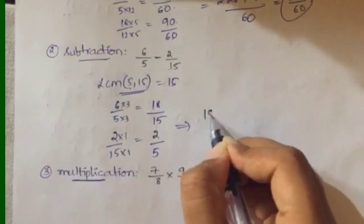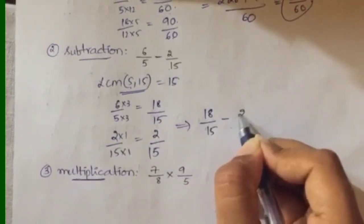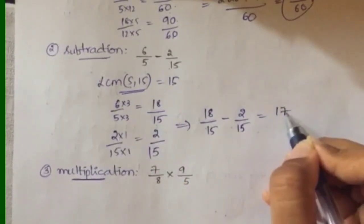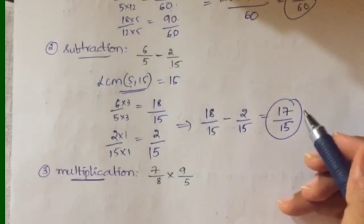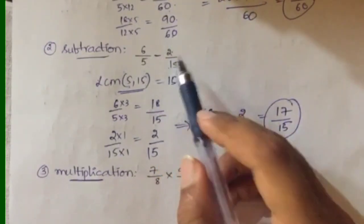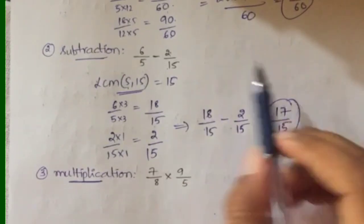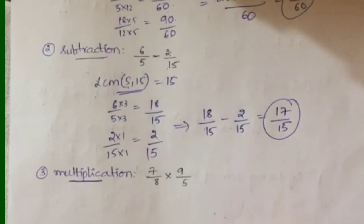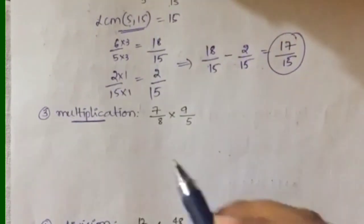For 2/15, you multiply only by 1 to get 15, so that stays as 2/15. Now subtract: 18/15 − 2/15 = 16/15. So the answer is 16/15. The same process you followed for addition applies here too — first make the denominators the same, then subtract the numerators.